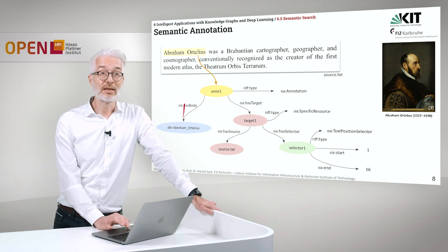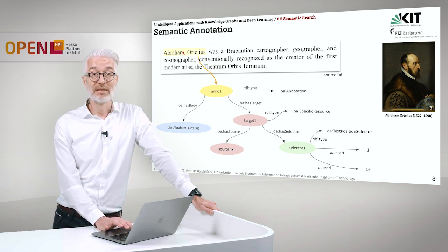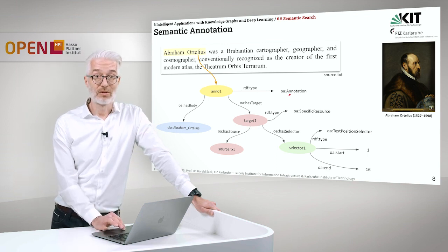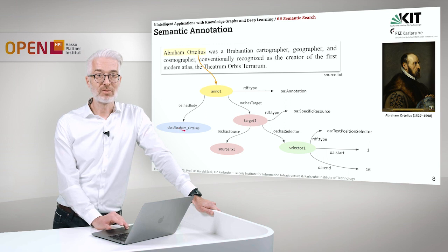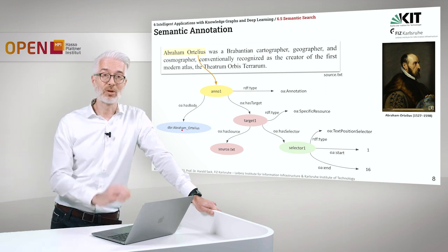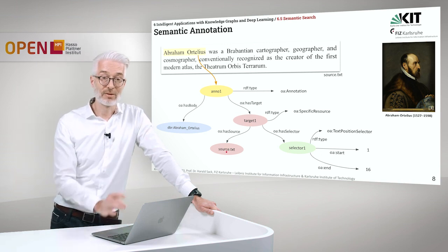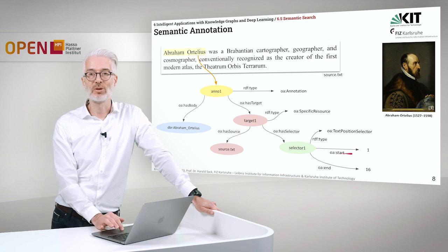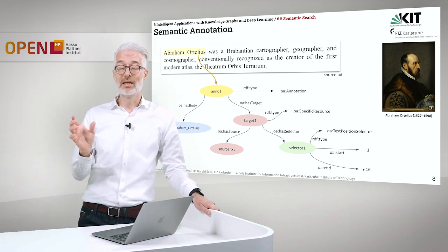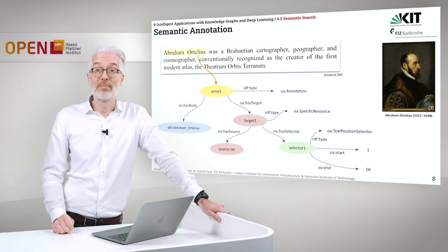If, for example, you want to annotate here the text that states something about Abraham Ortelius, you create for that text string here an annotation of type open annotation ontology annotation. And this has a body — that's the thing with which I want to annotate, that's the DBpedia resource of Abraham Ortelius. And the target is a specific resource that we are targeting — that's our source text. And, of course, this is from position 1 to position 16. You can exactly say what position in that text is annotated with a specific URI or entity. And that can then be perfectly used for semantic search.